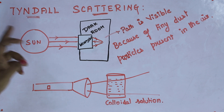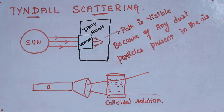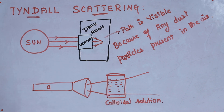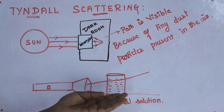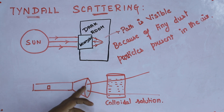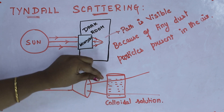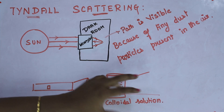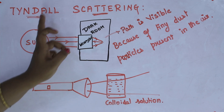The definition of Tyndall scattering is: the scattering of light rays by colloidal particles in a colloidal solution is called the Tyndall effect or Tyndall scattering. For example, I have drawn a beaker here filled with a colloidal solution. You can take water mixed with milk, which is also a colloidal solution. When you make light rays pass through the beaker, the colloidal particles inside scatter the light — this scattering is called Tyndall scattering.